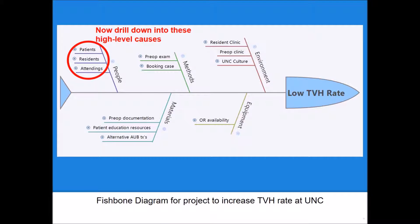And then for instance, in the people category, we came up with a couple of high level subcategories: patients, residents, and attendings. In other words, these are subcategories which we may be able to find deeper and deeper causes that contribute to our overall problem.